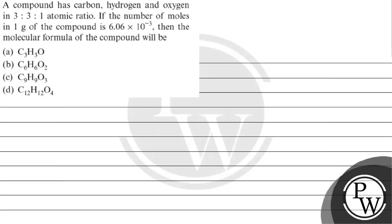Hello students, let's read this question. The question says a compound has carbon, hydrogen and oxygen in a 3:3:1 atomic ratio. If the number of moles in 1 gram of the compound is 6.06×10⁻³, then the molecular formula of the compound will be — options are given to us.